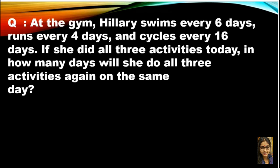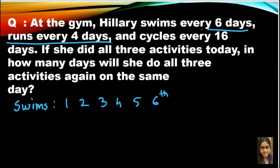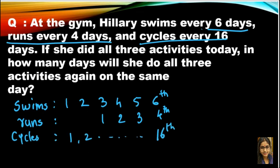So children, again we will see what is given in the question. Hillary at the gym swims every 6 days. Let us write down here. Suppose these are the days: 1, 2, 3, 4, 5, and 6. So she is swimming every 6 days. Then she runs every 4 days. Suppose this is 1, 2, 3, and 4. This is the fourth day. And she cycles on 16, so she cycles on the 16th day.